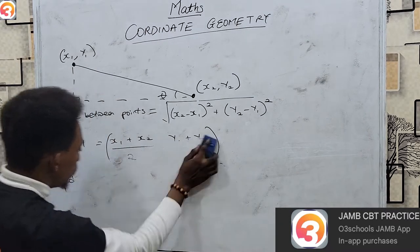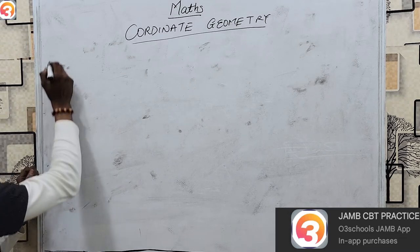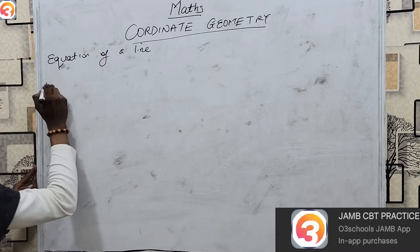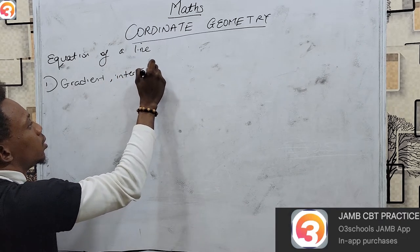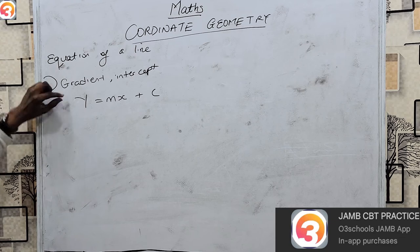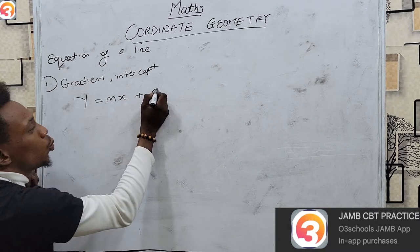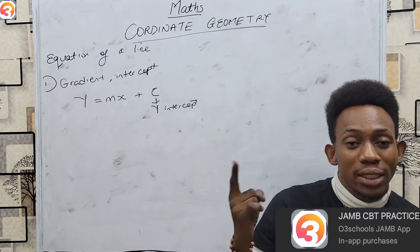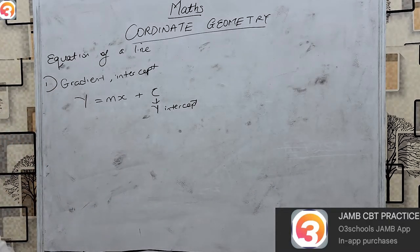Note your formulas. Next, we look at the equation of a line. The equation of a line comes in three distinct forms. Number one is the simplest — the gradient-intercept form: y equals mx plus c. Here, m is the gradient and c is the y-intercept, meaning the point at which your line cuts the y-axis, the point at which x is 0 on your line.